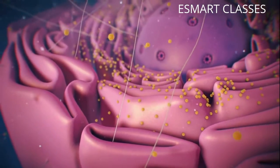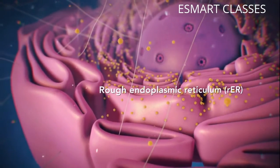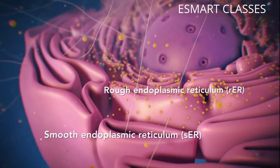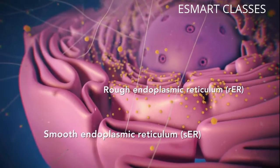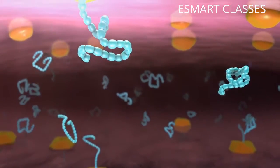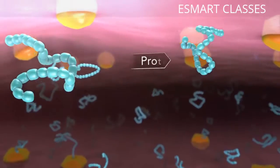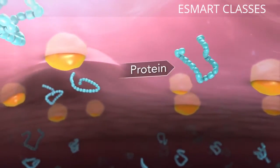There are two types of ER. Rough ER has ribosomes attached to it, and smooth ER doesn't have ribosomes attached to it. The endoplasmic reticulum is a membrane-enclosed passageway for transporting materials, such as the proteins synthesized by ribosomes.